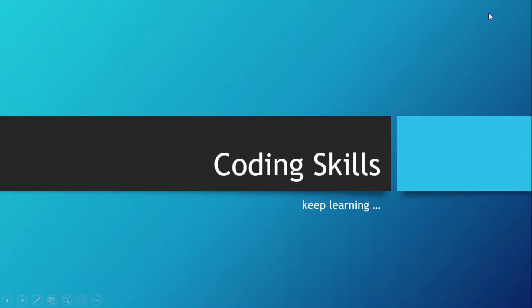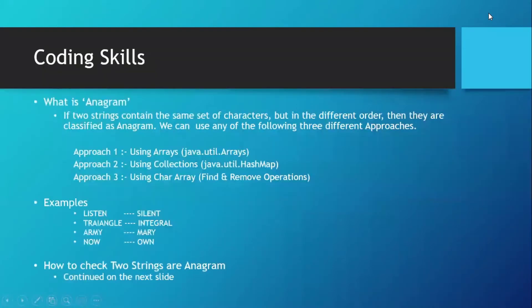What is anagram? If two strings contain the same set of characters but in a different order, then they are classified as anagram. We can use any of the following three different approaches to check if the strings are anagram or not: the first approach is using arrays, the second approach is using collections, and the last approach is using char array.